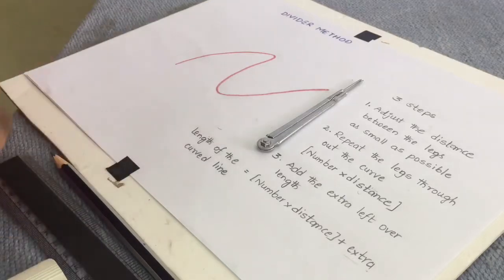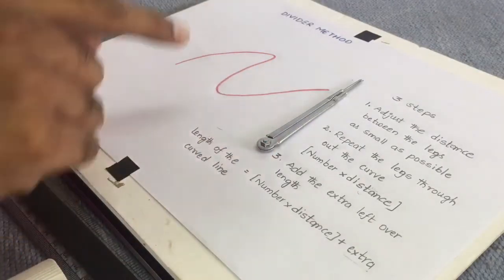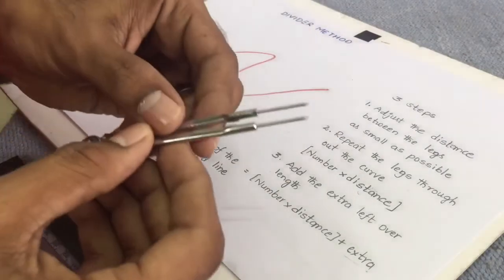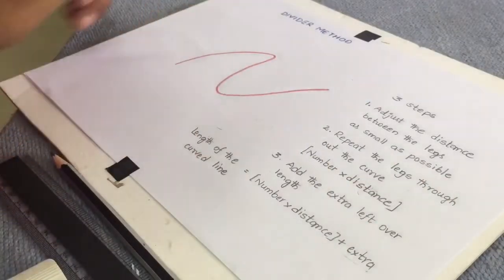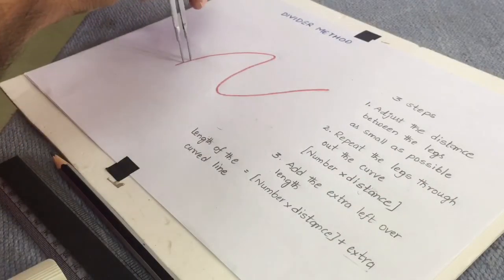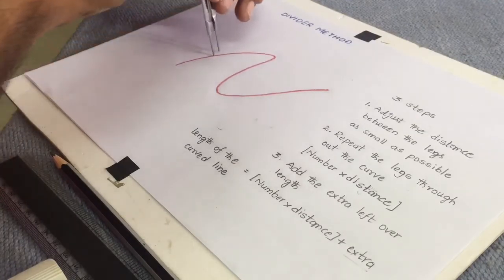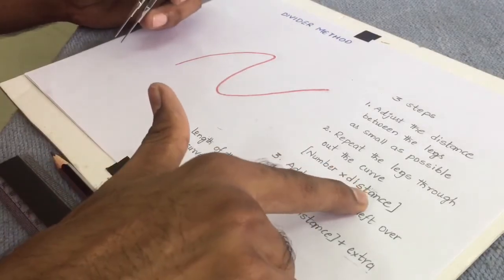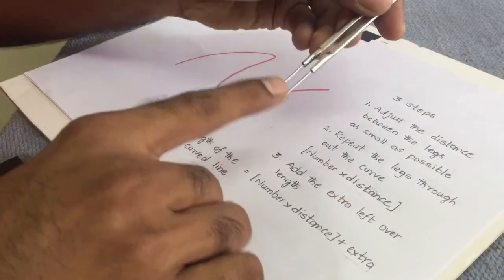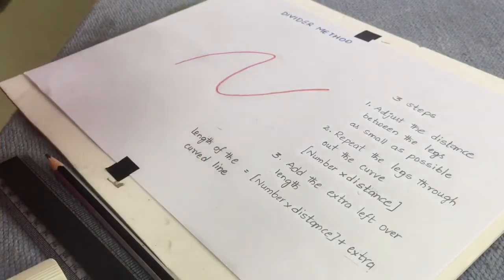Finding the length of a curved line with the help of a divider can be done in three steps. First, you have to adjust the distance between the legs as small as possible. Then repeat the legs throughout the curve, find how many times it is repeated, and multiply that number with the distance between the legs of the divider.